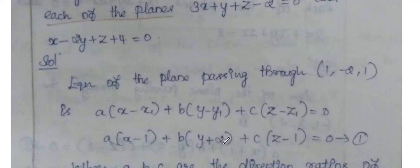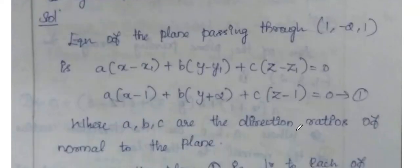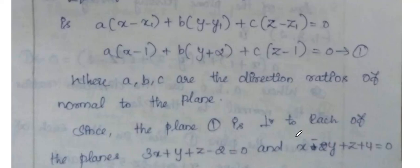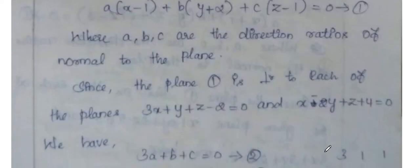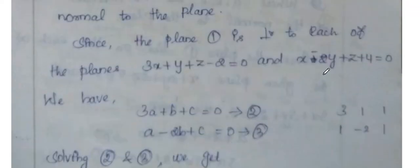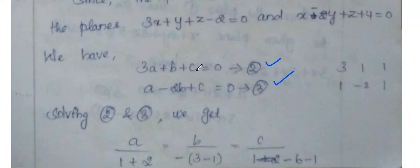Substituting x1, y1, z1 into the equation, where a, b, c are the direction ratios of the normal to the plane. Since the plane is perpendicular to each of the two given planes, we use the condition that if the plane is perpendicular, the dot product of normal direction ratios equals zero. This gives two equations. Solving these two equations simultaneously, we can find a, b, c and substitute to get the required plane equation.